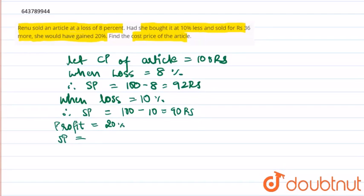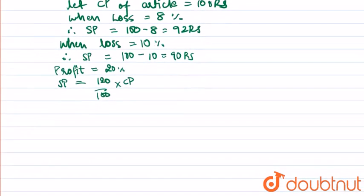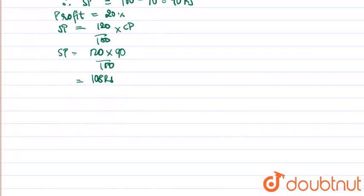then the selling price of the article is 120 upon 100 into the cost price. The selling price of the article is 120 into 90 upon 100 equal to 108 rupees.